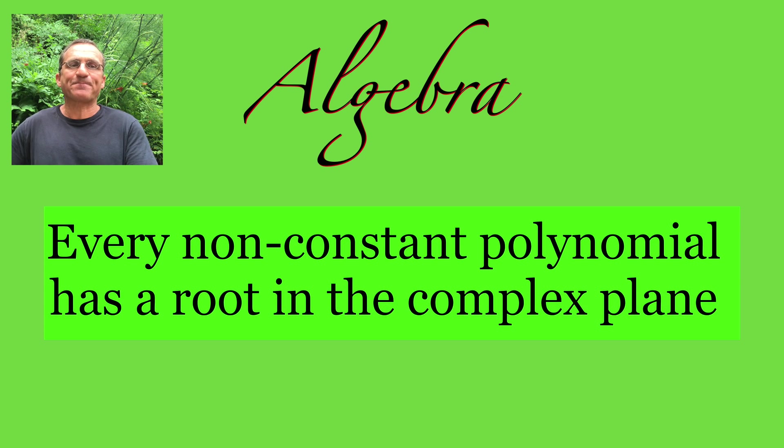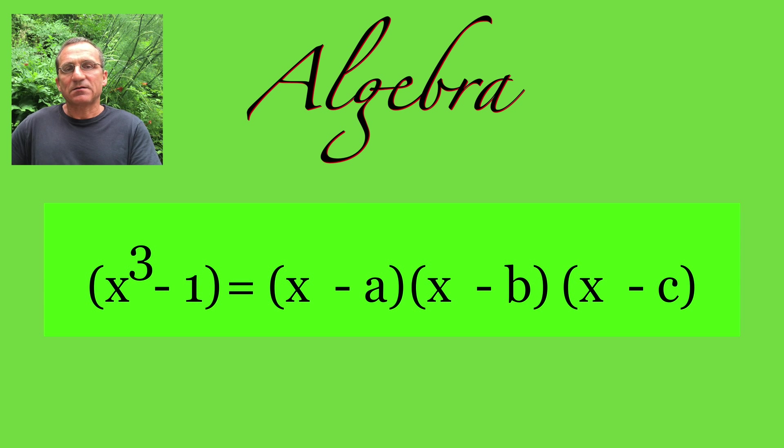Spot number nine goes to the fundamental theorem of algebra. It tells that a polynomial of degree n can be factored into n linear factors. A cubic polynomial, for example, can be factored into three linear factors. In this case, two of them will be complex.